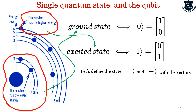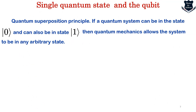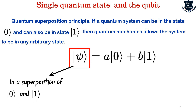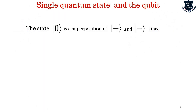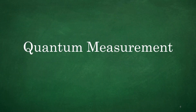If we define the state vectors as plus and minus, we get quantum superposition — a principle which states that a system can be in both state 0 and state 1, and quantum mechanics allows the system to be in an arbitrary state. This psi is actually a superposition of 0 and 1, and these are what we call the probability amplitudes. From here we will start with our new lesson: how can we make a quantum measurement.